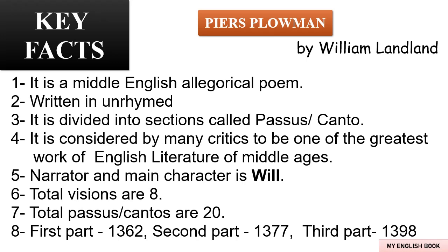Piers Plowman is considered by many critics to be one of the greatest works of English literature of the Middle Ages. William Langland is the writer of Piers Plowman and this was his masterpiece. Our main character and narrator is Will. There are a total of 20 pauses or cantos in Piers Plowman. It is believed it was written in three parts: the first in 1362, the second in 1377, and the third in 1398.